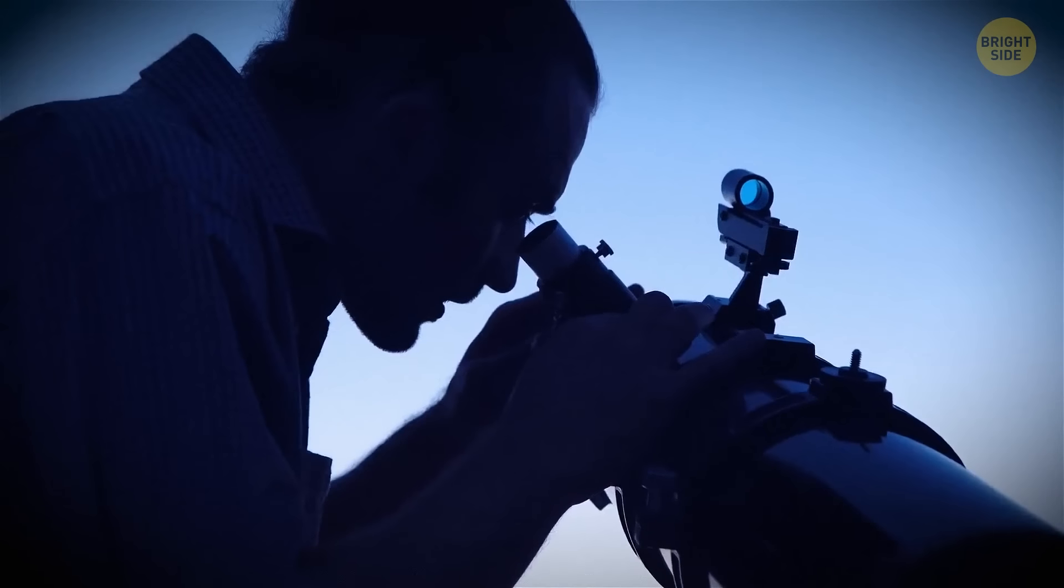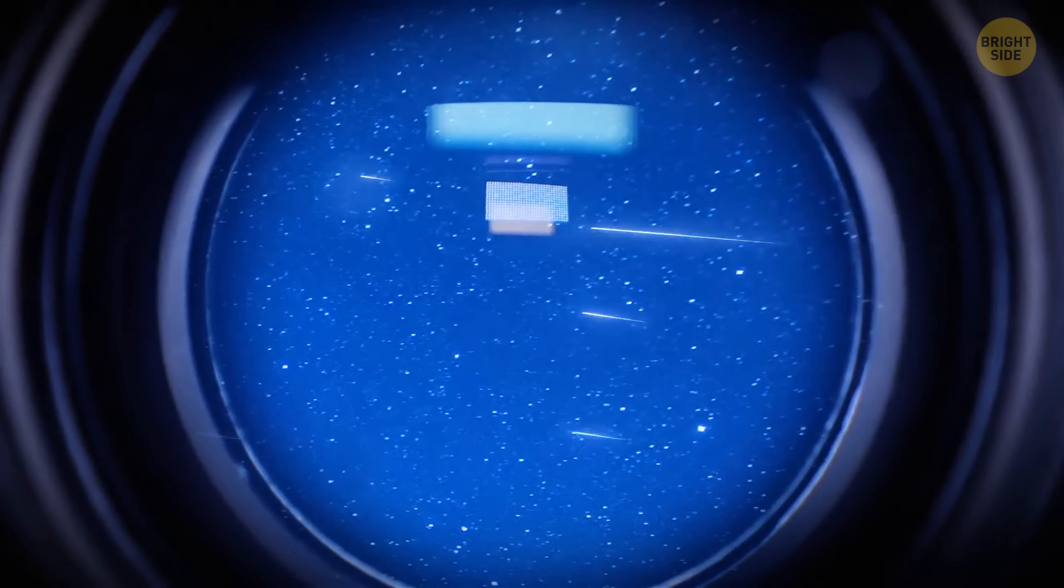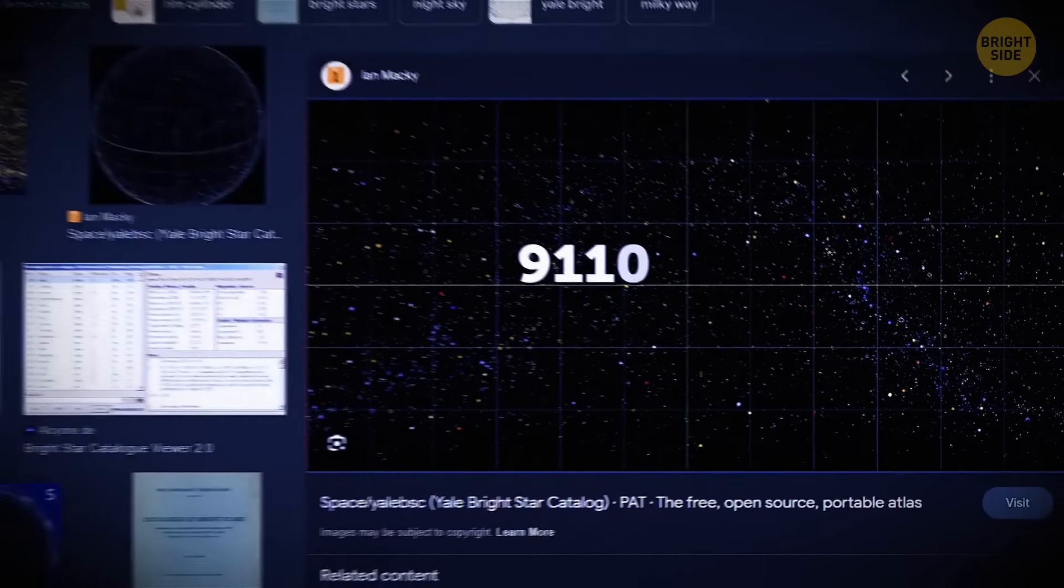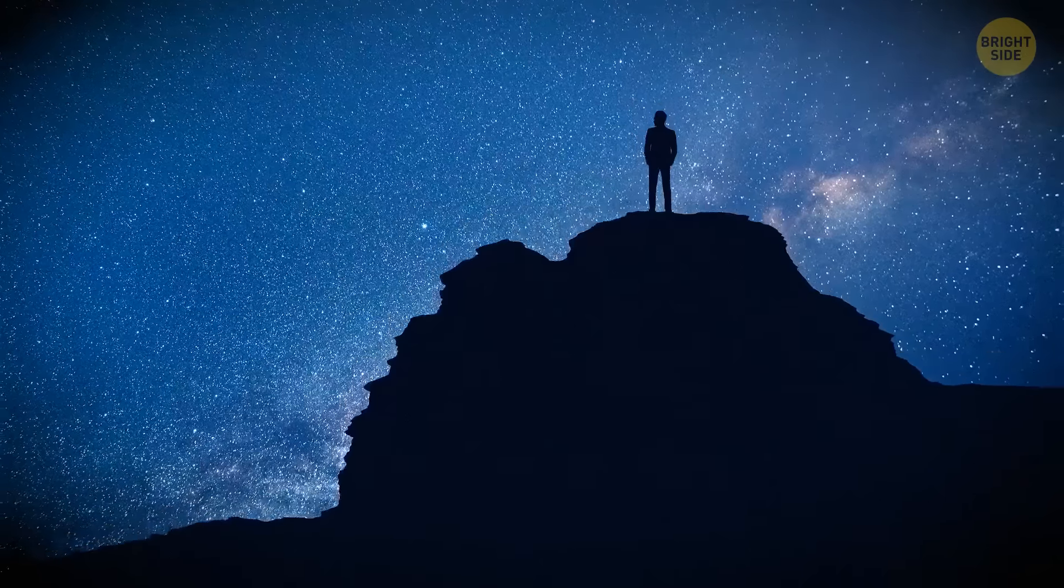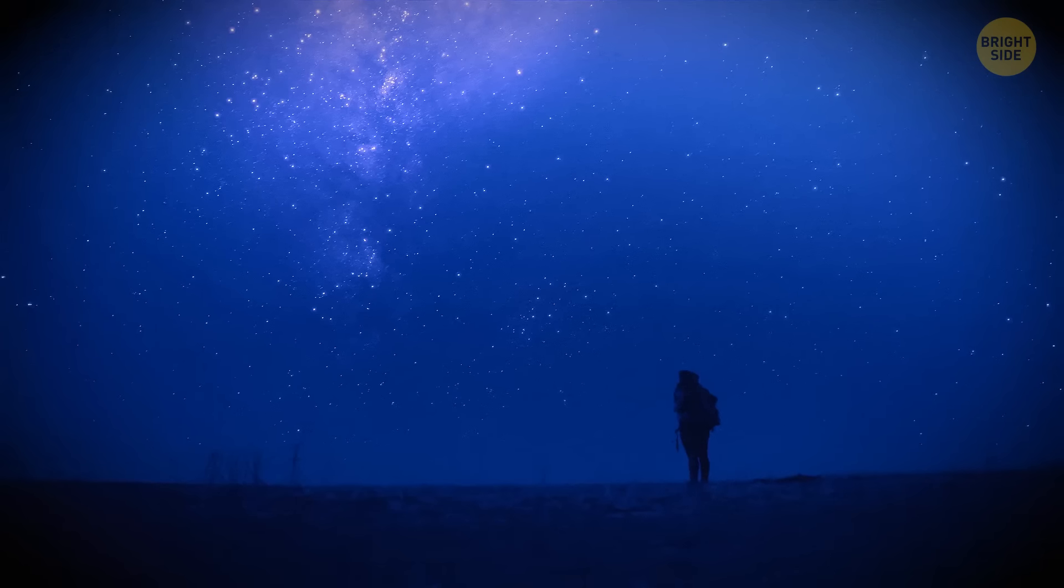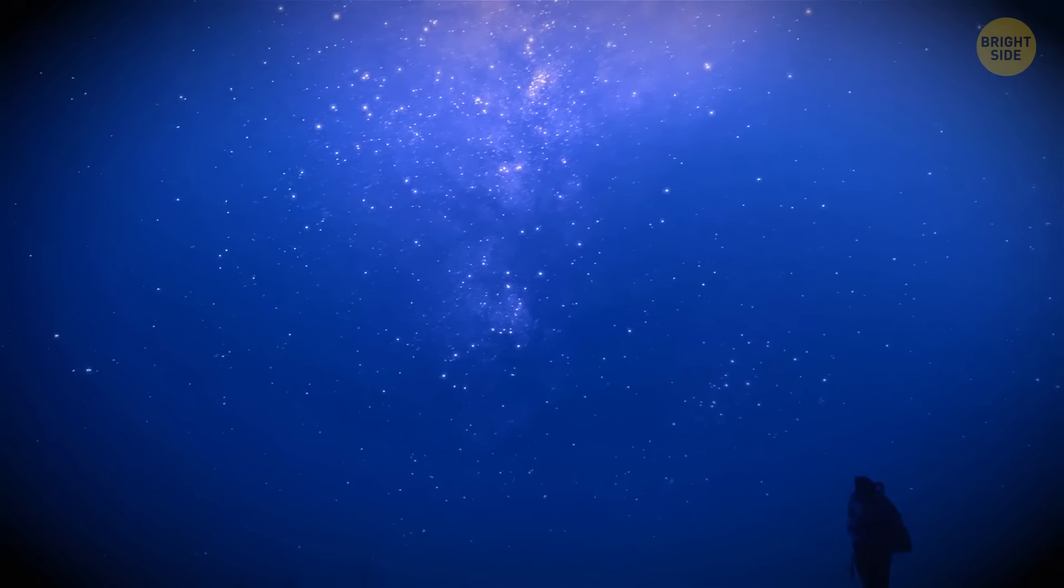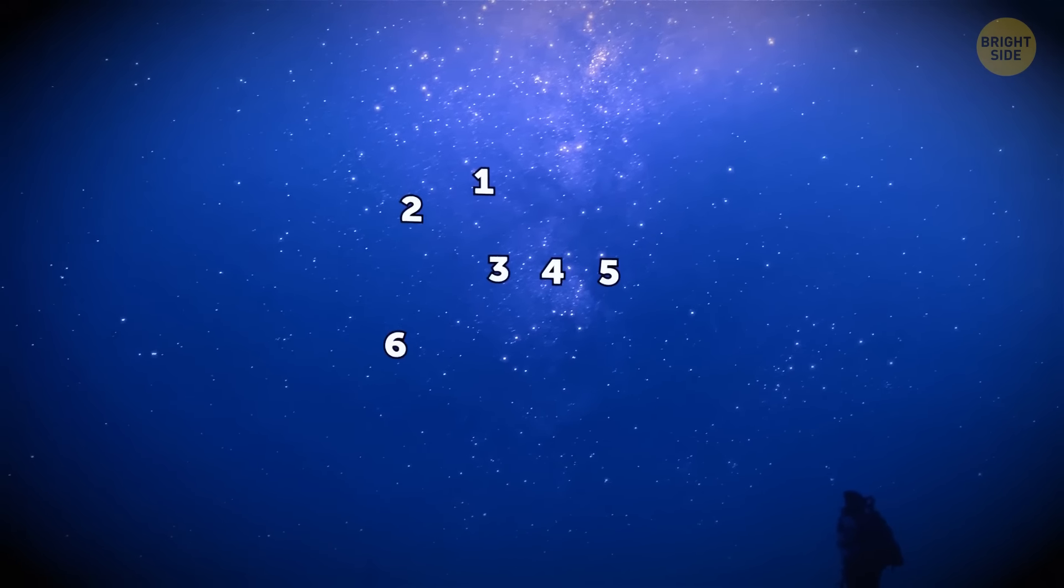Now, you might also think that there are too many stars in the night sky for you to count, but in fact, you can do that. According to the Yale Bright Star Catalog, there are 9,110 stars that you can see from Earth with the unaided eye. So technically, you can count them, but I wouldn't be surprised if you lost count.